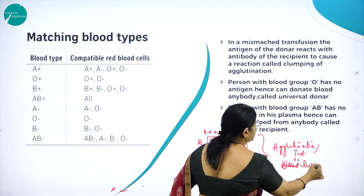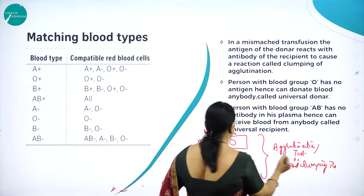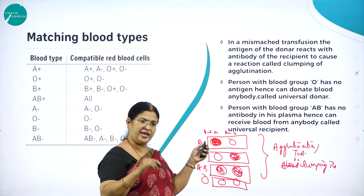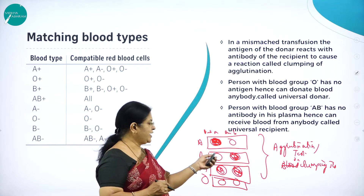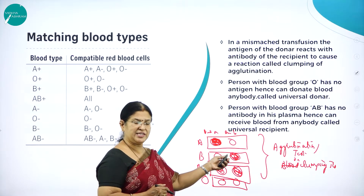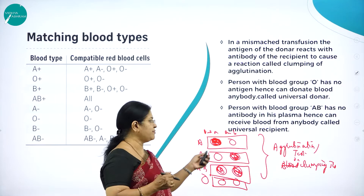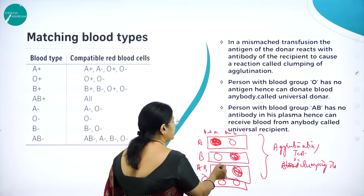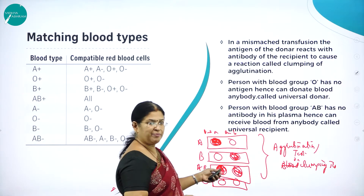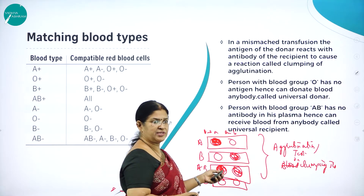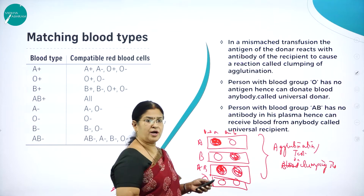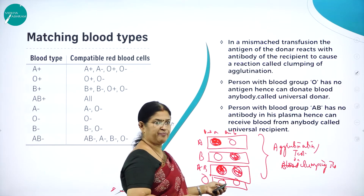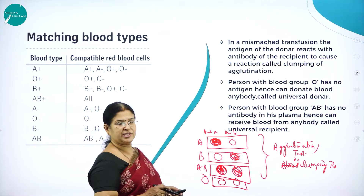When antigen A comes in contact with antibody A, clumping takes place. In the slide with anti-serum B, antigen B comes in contact with antibody B and clots. For AB, both antigens are present so clotting occurs in both slides. For O, there are no antigens, so adding antibodies to antibodies only means no clotting. This mechanism is called the agglutination test or clumping test.